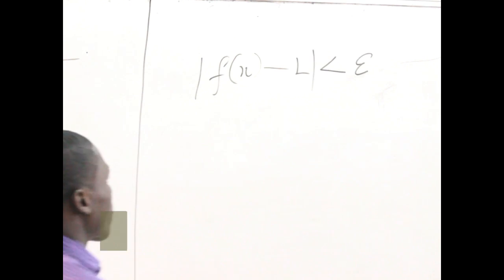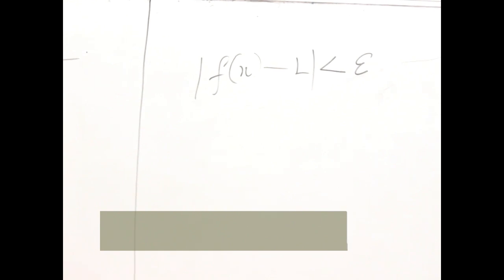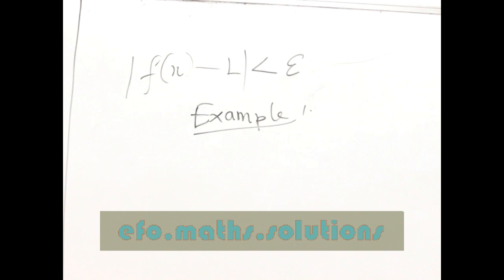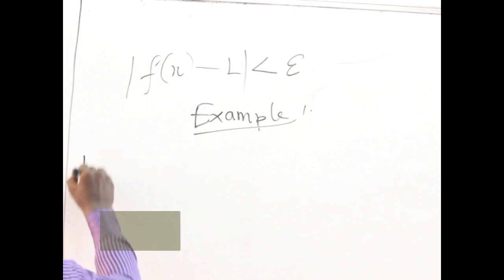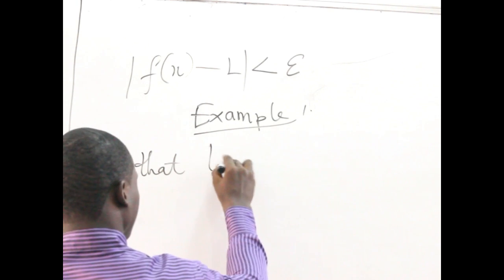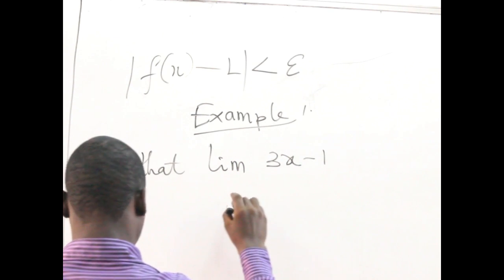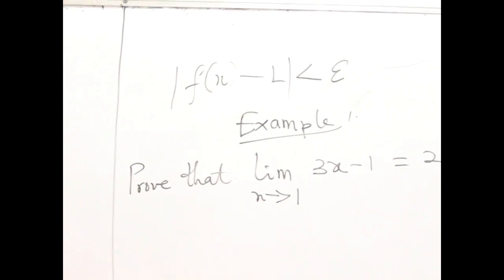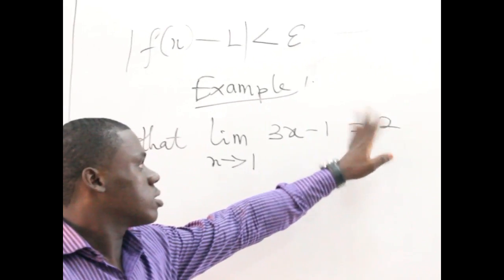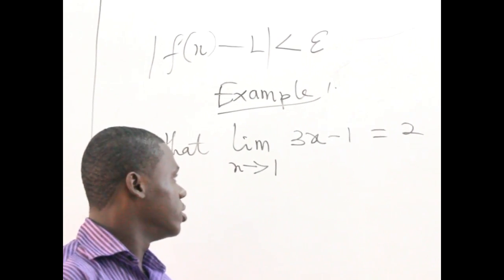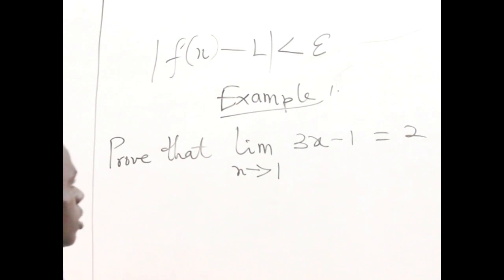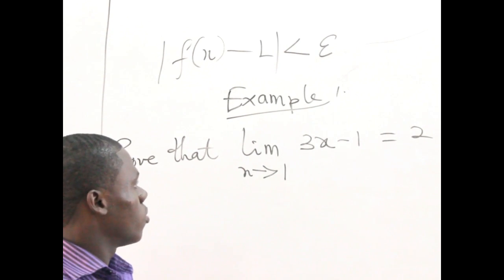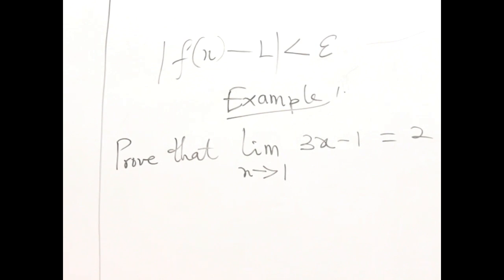Let's pick an example — it's not anything that's difficult. Example one: we have to prove that the limit of 3S minus 1, as S approaches 1, is equal to 2. This is true — you don't need any special experience to know that this is true. But what we want to do, as far as this course is concerned, is prove that this is indeed the case. Let's see how we do the proof.